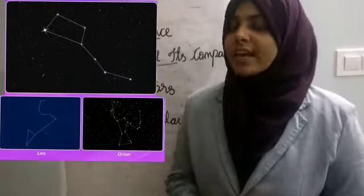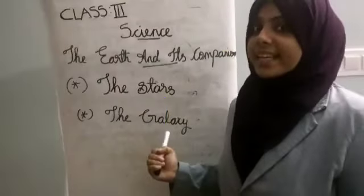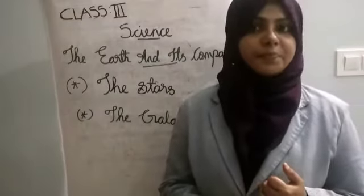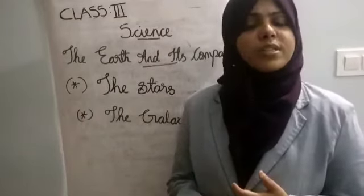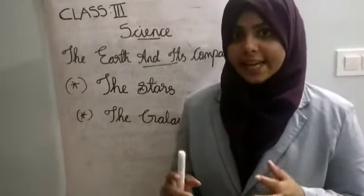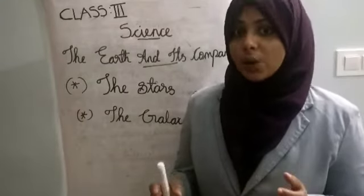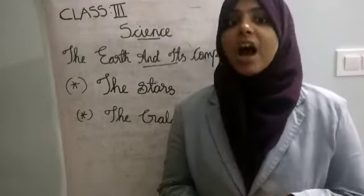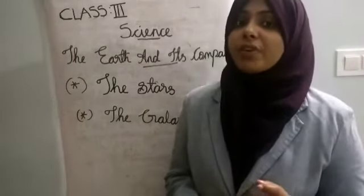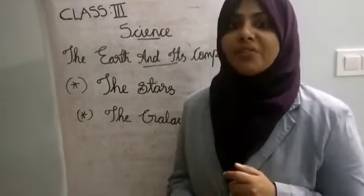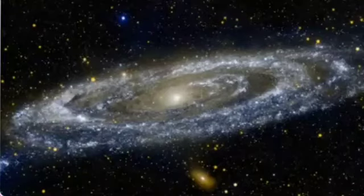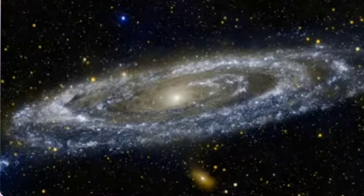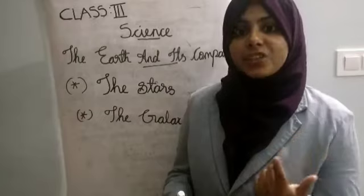Then, galaxy. The solar system, stars, and constellations together form a galaxy. Our solar system is a part of a galaxy called the Milky Way. It is spiral in shape.